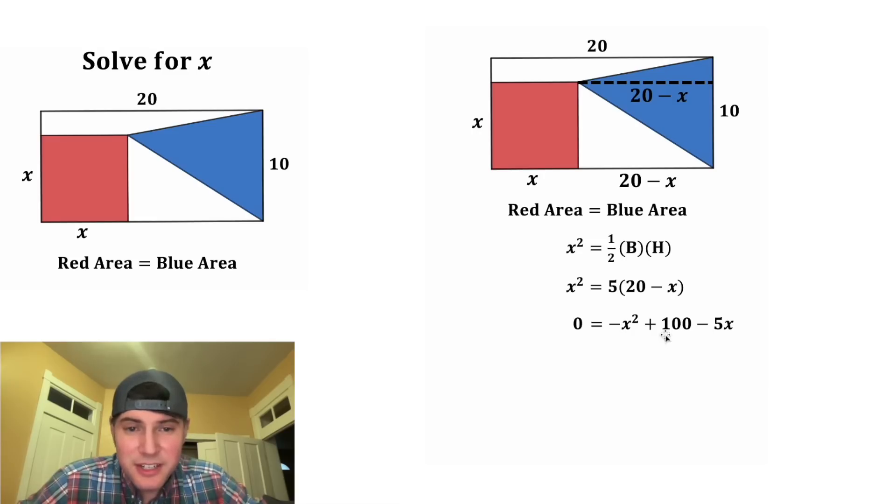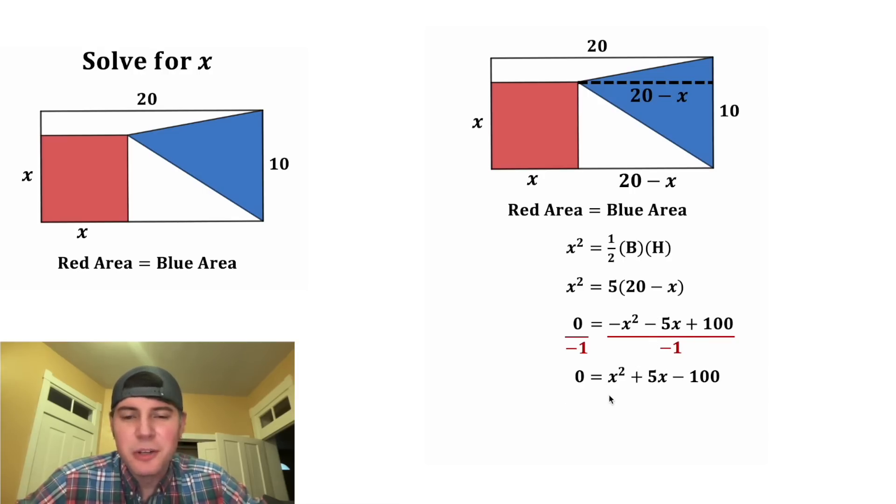Next, let's rewrite this in descending order. We can switch the negative 5x and the 100. And then I don't really like the negative leading coefficient, so let's divide both sides by negative one. That makes this positive, this positive, and this negative. So we end up with zero equals x squared plus 5x minus 100.